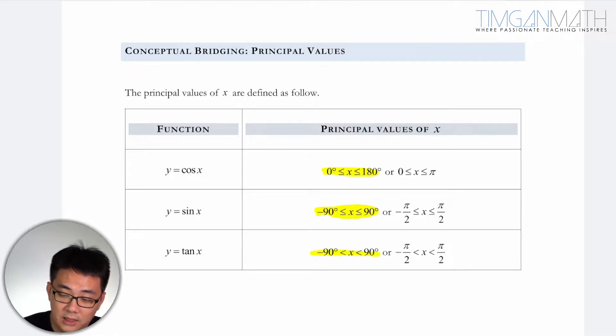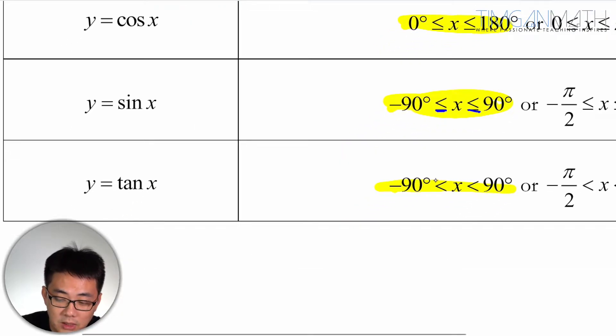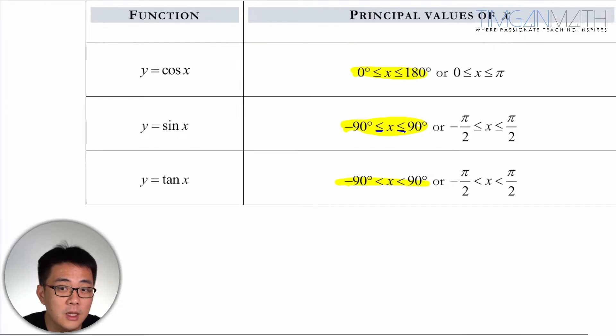But the difference between sine and tangent is that sine is inclusive of negative 90 and 90, whereas for tangent it's not inclusive because of the asymptotes.